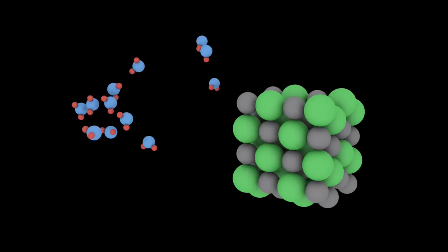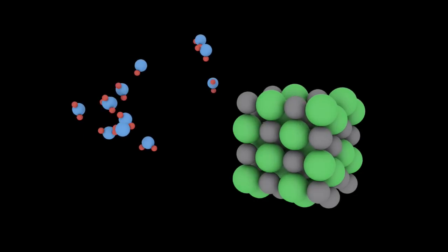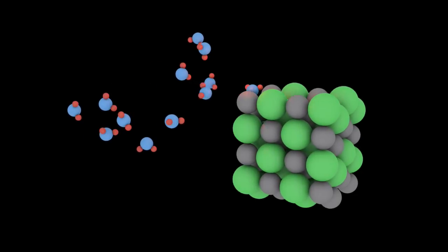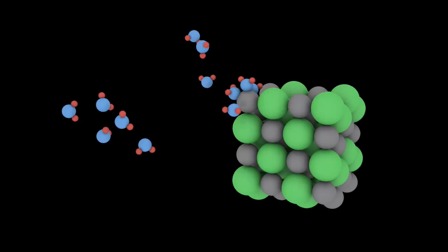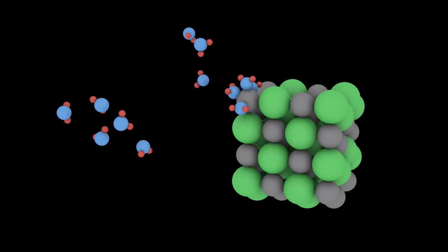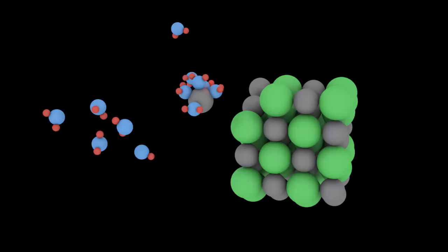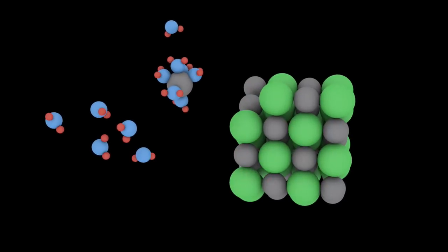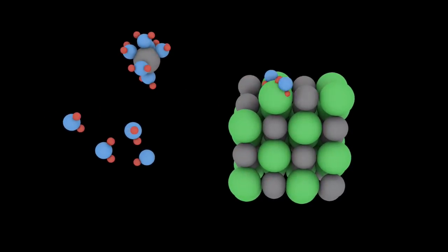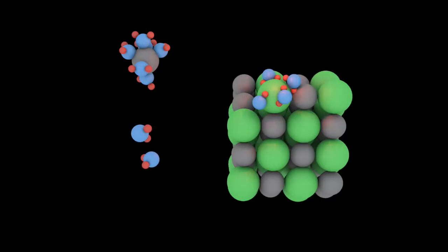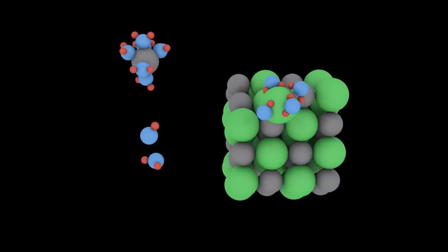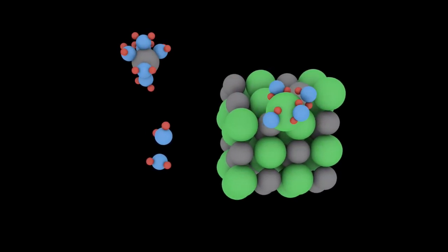So this video shows water dissolving sodium chloride, salt. Every red flash is an exothermic event. Heat is released. And a blue flash is an endothermic event. Heat is absorbed. So you can see bond making is exothermic and bond breaking is endothermic.